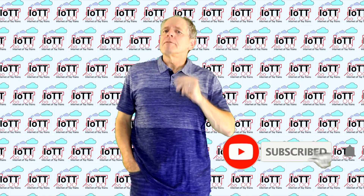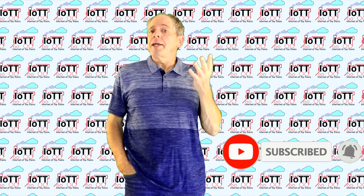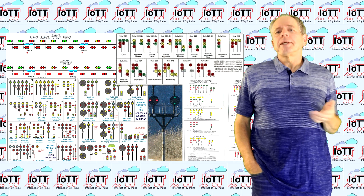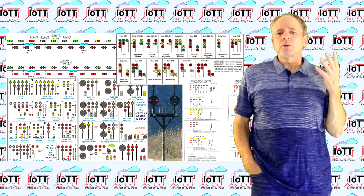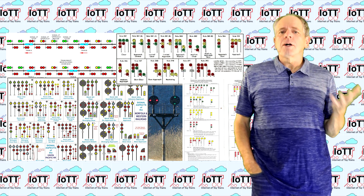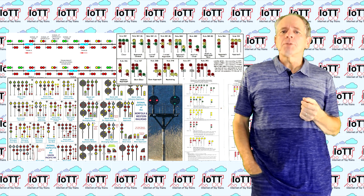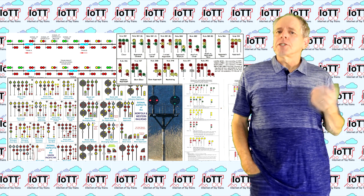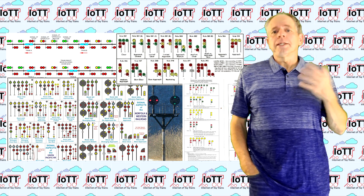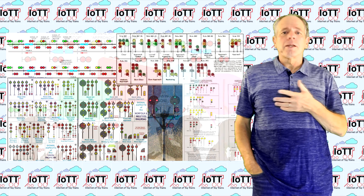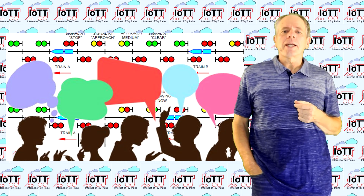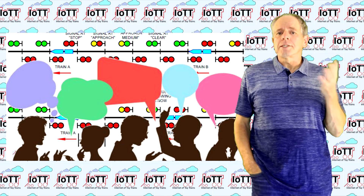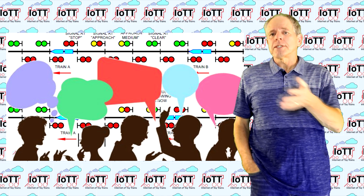Signalling is probably one of the topics that have many model railroaders somewhat confused. One of the reasons might be that pretty much every railroad company has its own specialty when it comes to what is to be displayed on the mast and the rules to be applied in each situation. So there are plenty of topics to be discussed and learned about in model railroader gatherings. At the core, however, signalling is always the same 3-step process.